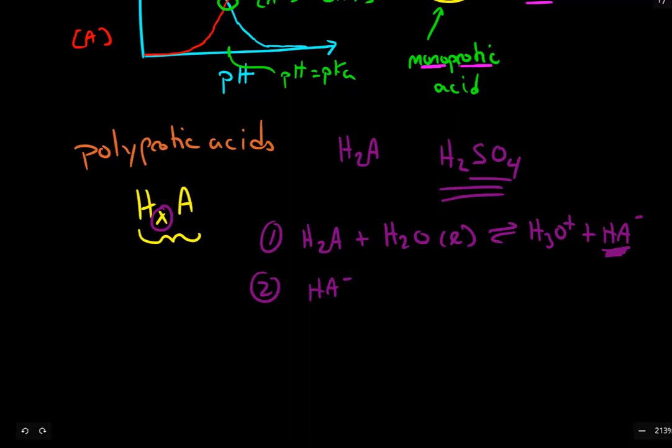So in the second reaction, HA can react with another water molecule to generate another equivalent of hydronium. So this is an example of a diprotic acid. Two distinct and subsequent acid dissociation reactions occur. Each of these have their own pKa value.